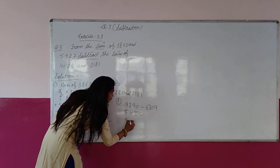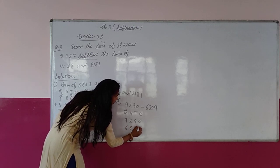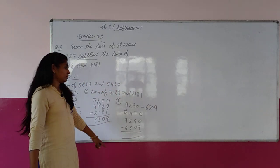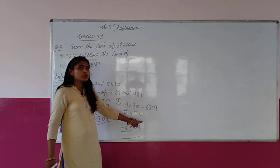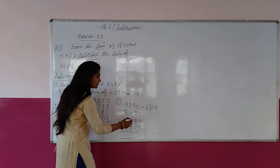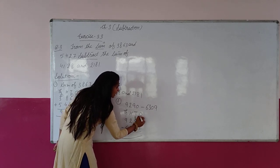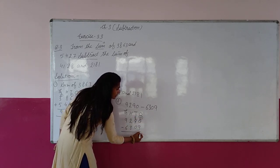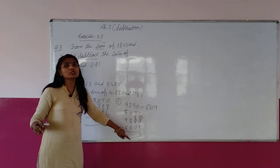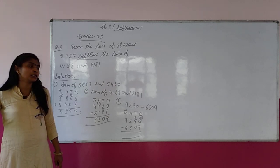So we have to take the borrow from the next place. 9 से हमने borrow लिया, 9 बन गया 8, और 0 बन गया 10. 10 में से 9 subtract — what will come? 1. 8 में से 0 subtract — what will come? 8.